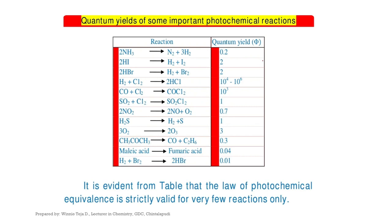In this slide, you can see different photochemical reactions and their quantum yields. For example, in the very first example, dissociation of ammonia has a quantum yield of 0.2, and formation of thionyl chloride has a quantum yield of 1. There are different quantum yields for different photochemical reactions.